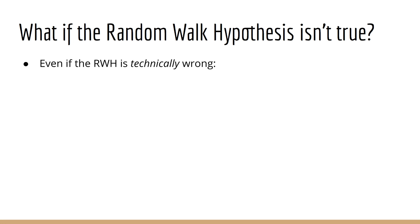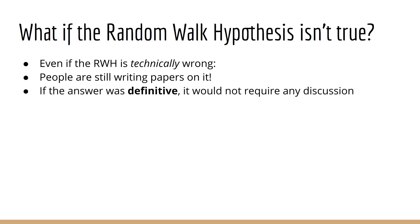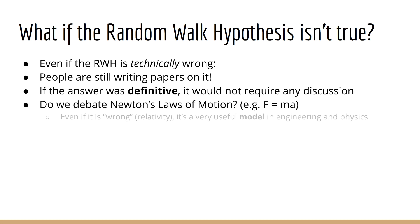Even if it is true that the random walk hypothesis is technically wrong, the thing is people still discuss this today and even write journal papers about it. That should tell you something. If this was a solved problem, then we wouldn't have to discuss it anymore. Take Newton's laws of motion for example - does anybody debate the equation F equals ma? Certainly not that I know of.